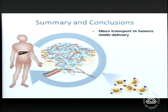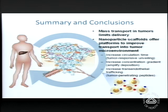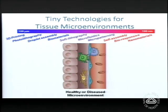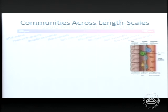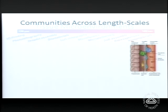In summary, mass transport in tumors limits delivery. Nanoparticle scaffolds offer lots of potential to improve transport into the tumor microenvironment. Nanosystems can be composed of cooperating components. These tiny technologies of bottom-up assembly and top-down fabrication spanning from 100 microns to 100 nanometers provide a whole array of tools to study healthy and diseased microenvironments. Our hope is that in studying these microenvironments, we'll ultimately impact the health of our patients and society as a whole.